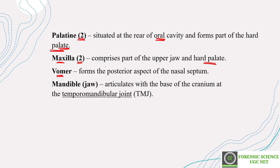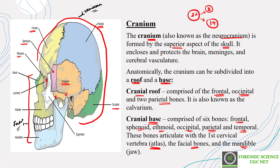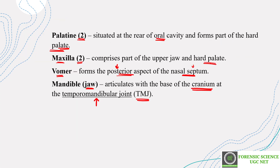Next is the vomer bone, which forms the posterior aspect of the nasal septum. Following that is the mandible — your lower jaw. The mandible articulates with the base of the cranium, but not through sutures. Instead it is joined via the temporomandibular joint, or TMJ. This joint connects the lower jaw to the skull, and the mandible joins the skull through the TMJ — the temporomandibular joint.